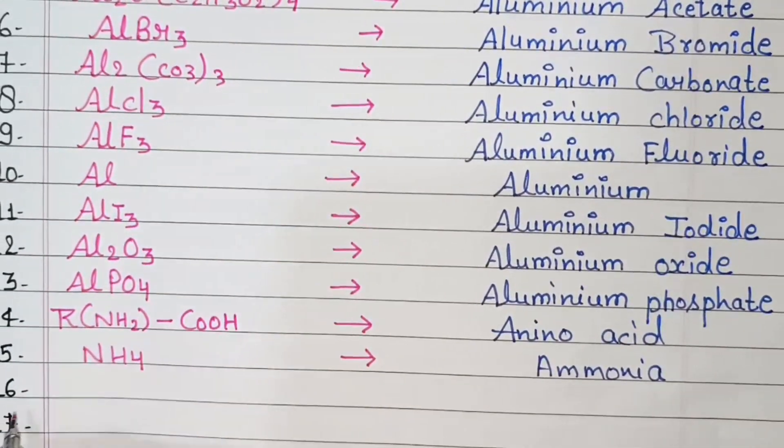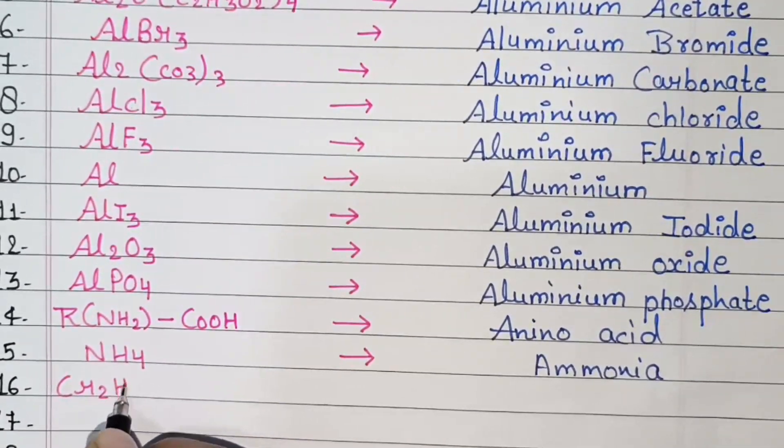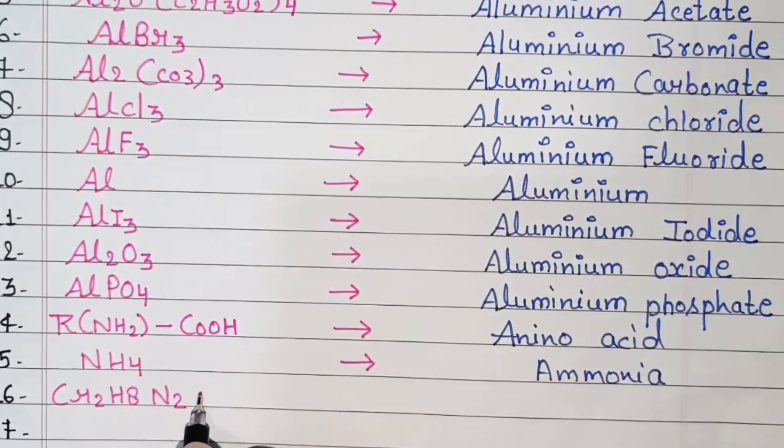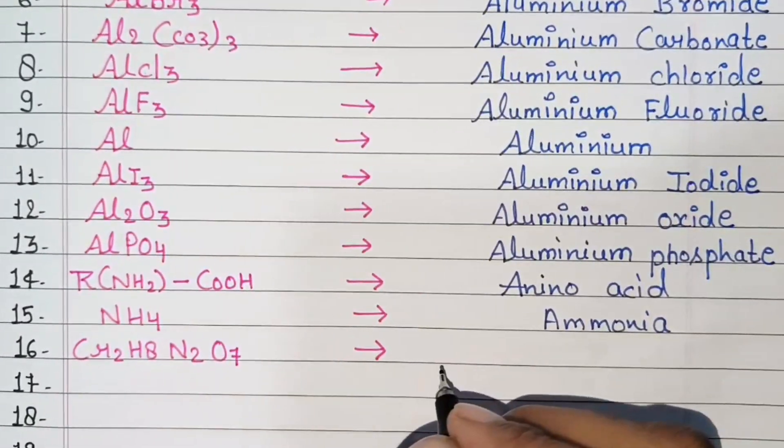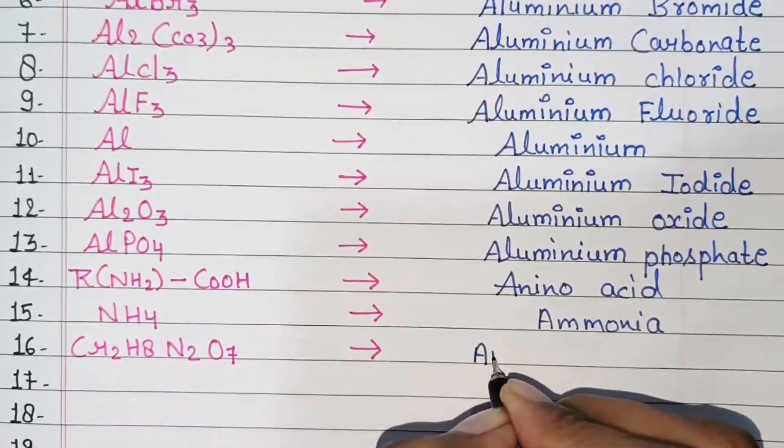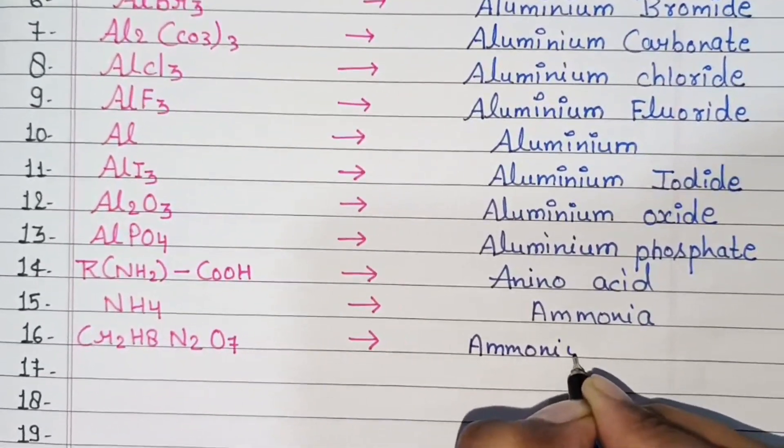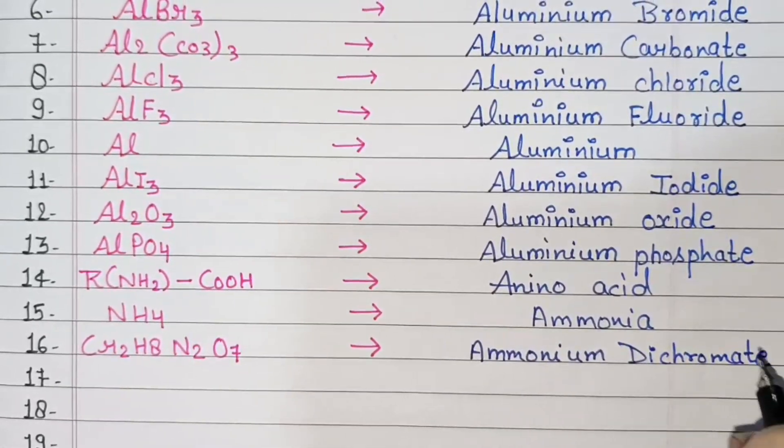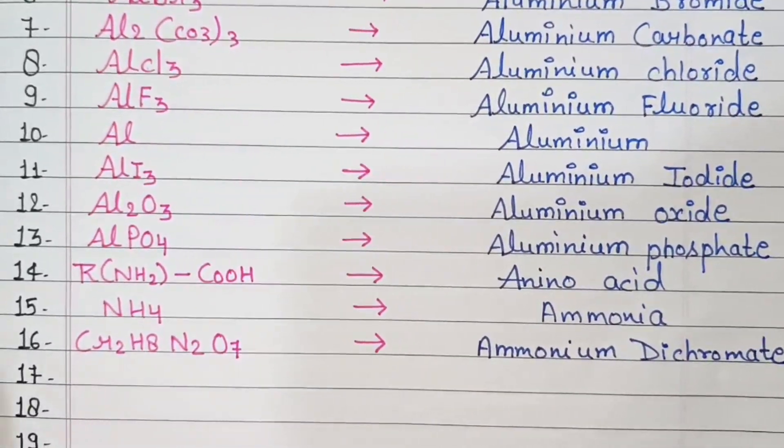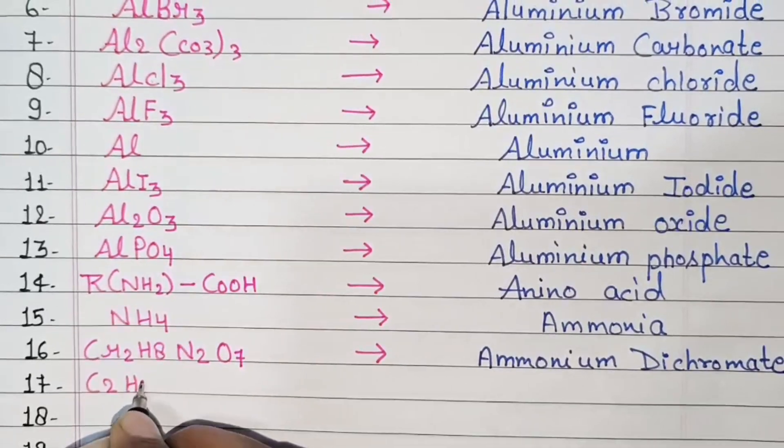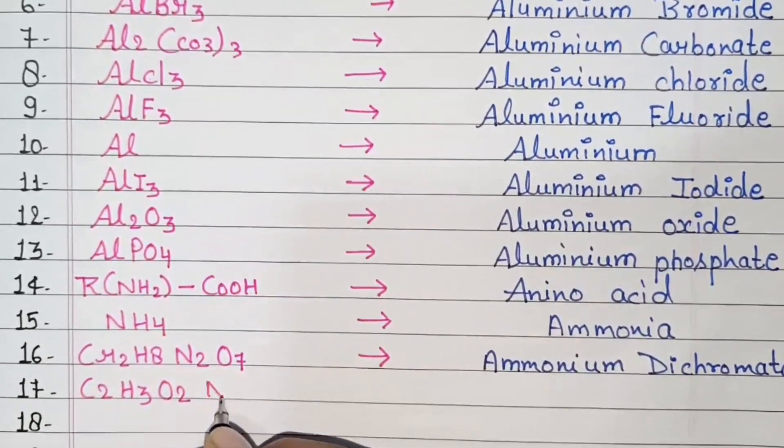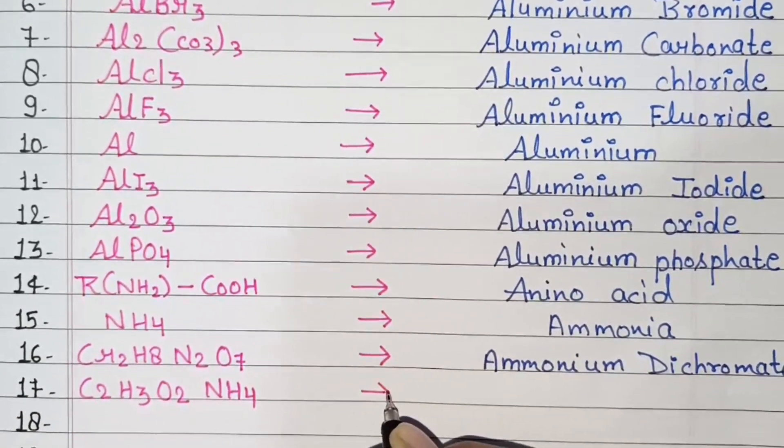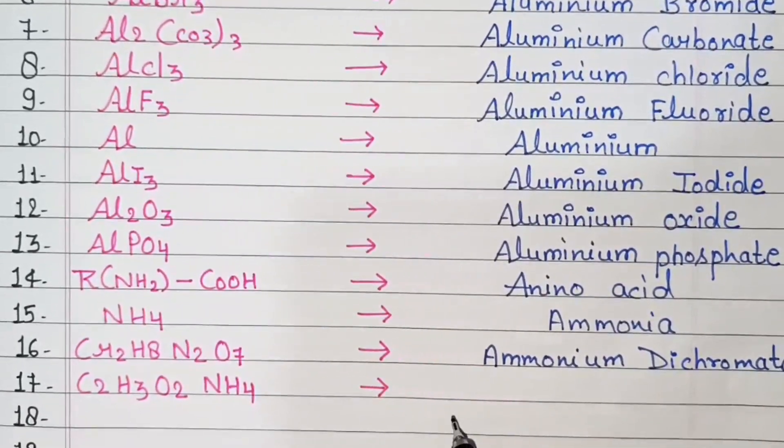Next, Cr2H8N2O7, ammonium dichromate. Next, C2H3NH4, ammonium acetate.